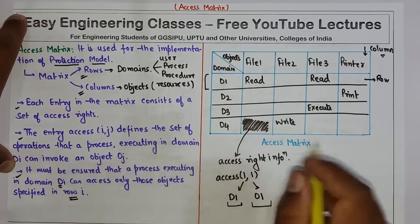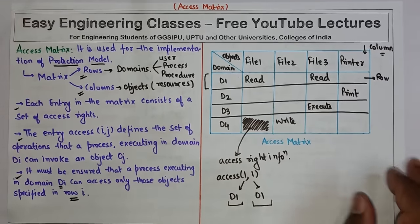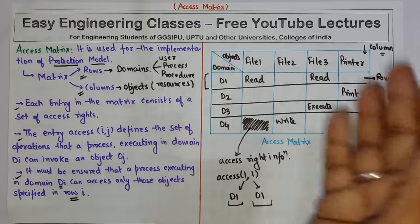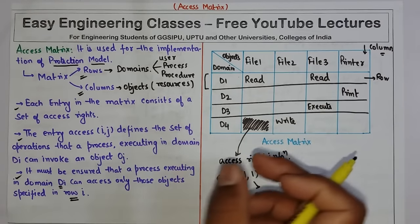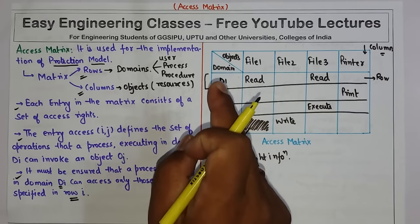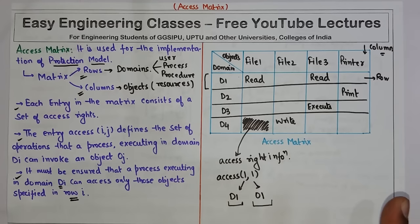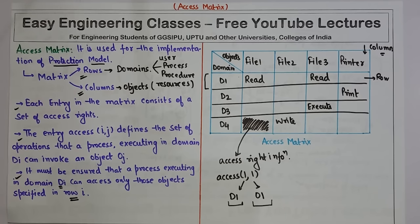So these are the four main points of the access matrix. If a question comes, you can write the theory, give this example, and explain how the process executing in domain d1 can issue read on file1. This is about the access matrix which is used for the implementation of the protection model. Thank you for watching the video. Please subscribe to my YouTube channel for more such tutorials.